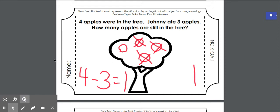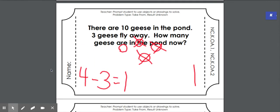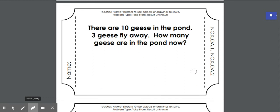Let's do another. Miss Ingram will erase what we had here. This problem is talking about geese. Says that there are ten geese in the pond. Three geese fly away. How many geese are in the pond now?